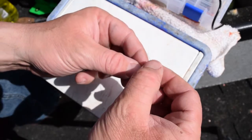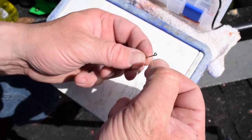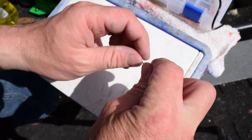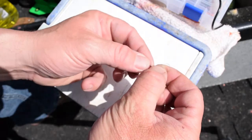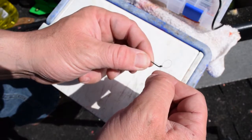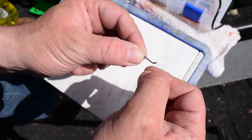What you're going to do is go through the eye first, go through it once, go through it twice. You pull that tag end down the shank of the hook. That gives you a little loop. You see the loop?